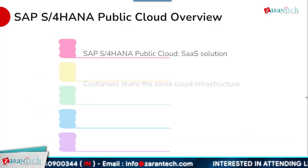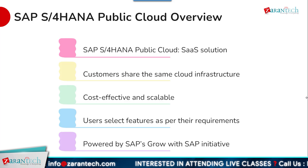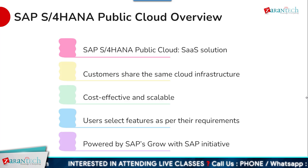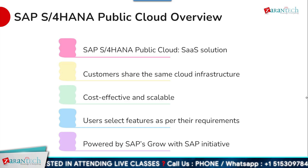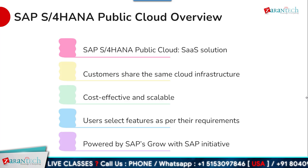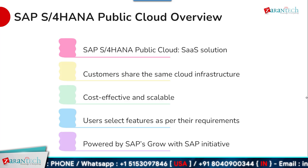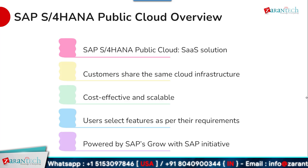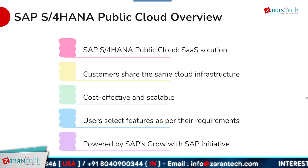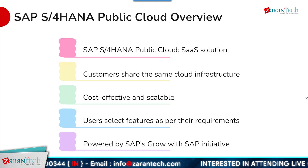As a Software-as-a-Service (SaaS) solution, SAP S/4HANA Public Cloud provides a shared cloud infrastructure that multiple customers can leverage. This multi-tenant approach makes the solution highly cost-effective and scalable. Customers can select the specific features they require, tailoring the system to their unique needs. Powered by SAP's GROW with SAP initiative, organizations can quickly deploy a modern ERP system without significant upfront investments.